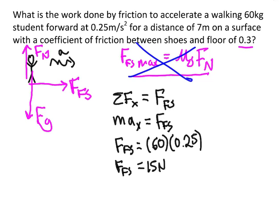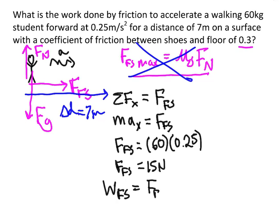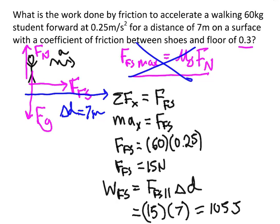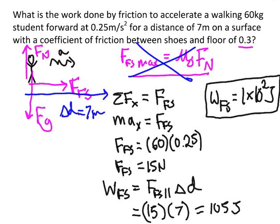Now this student moves forward a delta D of 7 meters. The static friction force is beautifully parallel to delta D. So the work done by the static friction force is just that force — the full 15 newtons — multiplied by delta D, the 7 meters. That gives me 105 joules. Rounding to significant figures, the work done by that static friction force is 1 × 10² joules of energy — that's what the friction force is adding to the system.